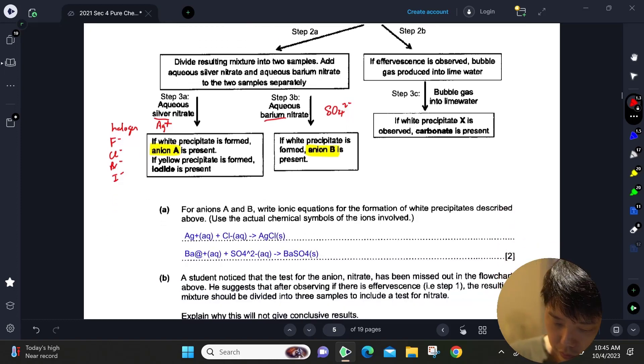So you're looking for white precipitate, which means you're looking for chloride, and for white precipitate here you're looking for sulfate.